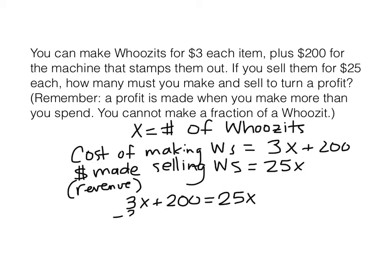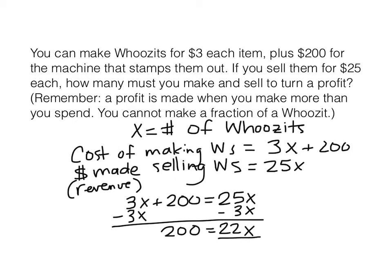This is what we'll solve. Subtract 3X from both sides, then divide by 22. We end up with a little bit more than 9 — it's 9 and 1 eleventh, so with a remainder of 2 over 22. This is not going to divide evenly.